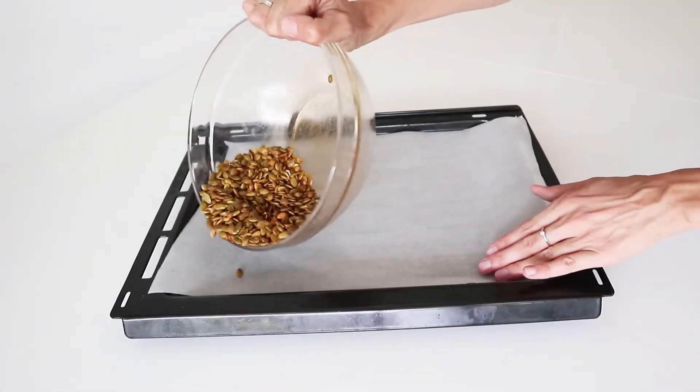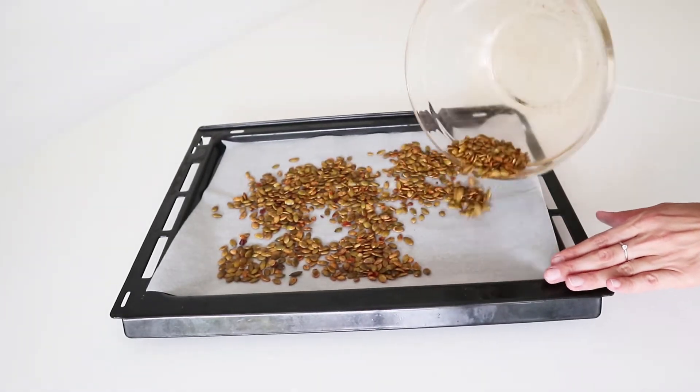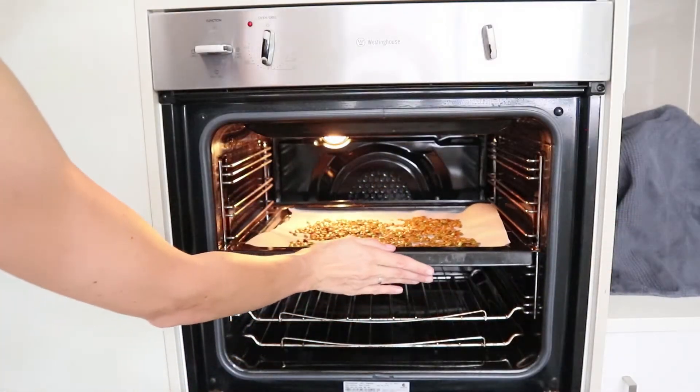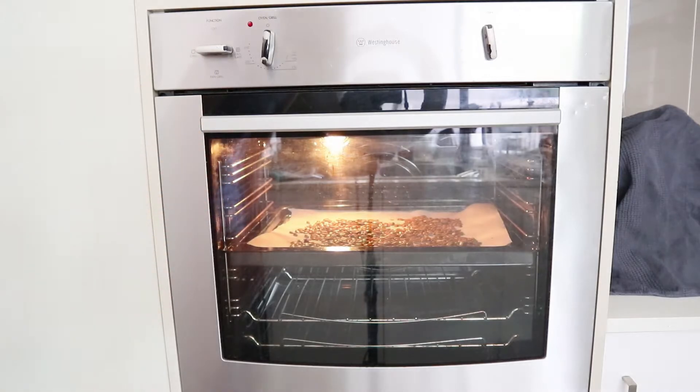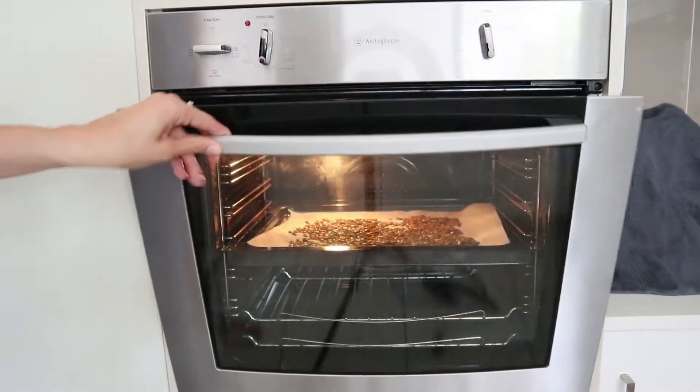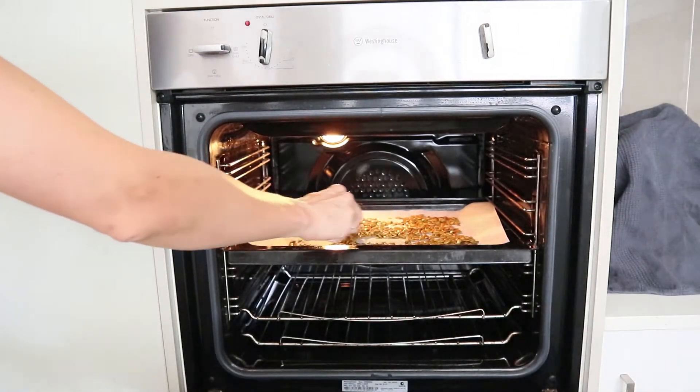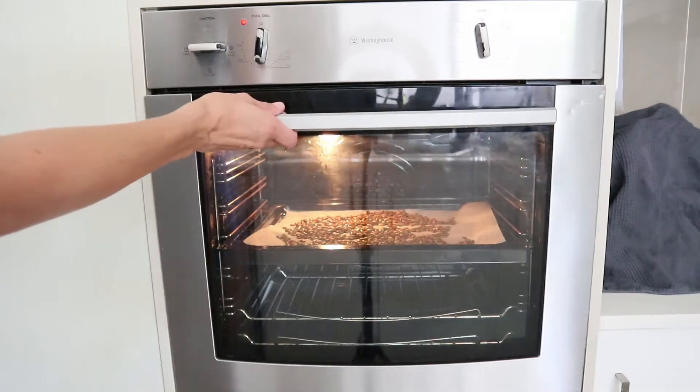When you finish stirring all your pepitas, put them on a baking tray lined with baking paper, then put the baking tray in a preheated 160 degrees Celsius oven for around 12 minutes. The time depends on the oven you've got. Don't forget to stir your pepitas once or twice while baking so they are evenly baked.